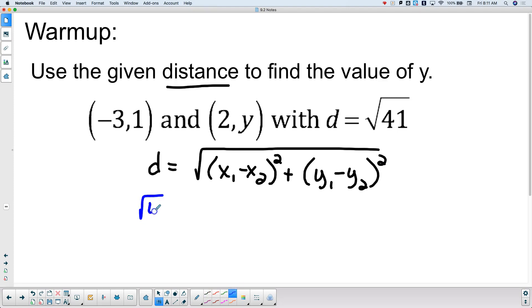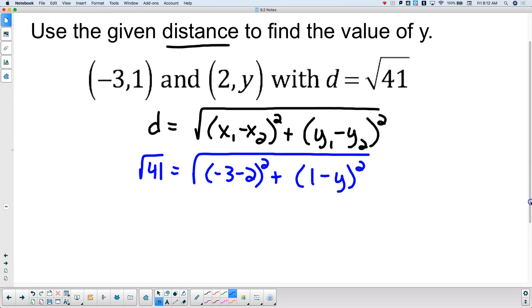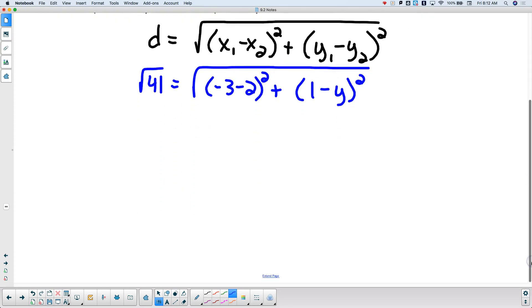Square root of 41 equals, big square root, negative 3 minus 2 quantity squared, 1 minus y quantity squared. And all of that is under a big square root. Love it so far. Faith, what did you do next? Got rid of the square roots by squaring both sides. Love it. Because there's a square root on both sides. So let's square both sides to get rid of it.